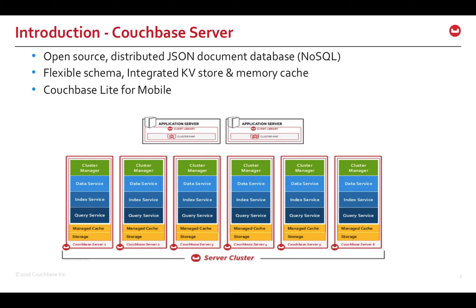To quickly introduce, Couchbase Server is an open-source distributed JSON document database with integrated key-value store and memory cache. It is architected to deal with SQL and NoSQL needs of modern digital economy applications, and it comes with a lighter version for mobile and IoT.